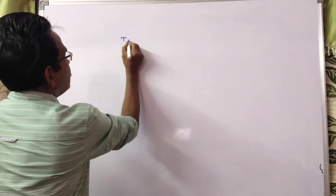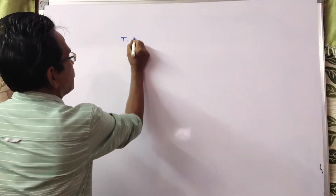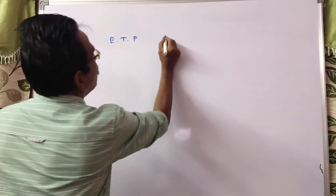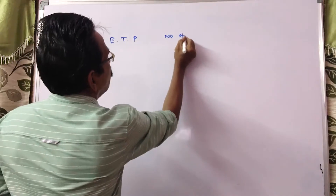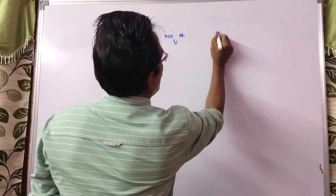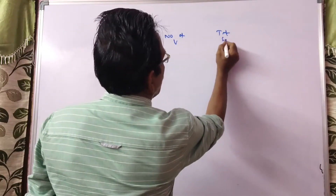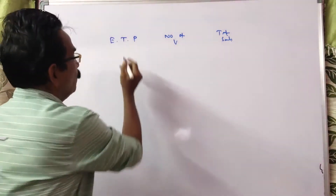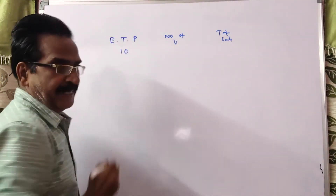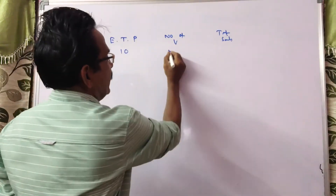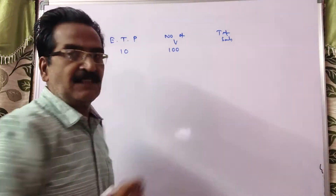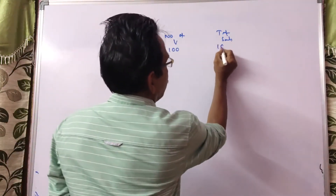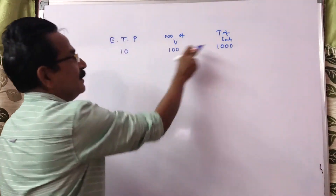See, each ticket price, number of visitors, total sales. Each ticket price was Rs. 10 in the beginning. Say the number of visitors was 100, then the total business must be 100 into 10 = 1,000.